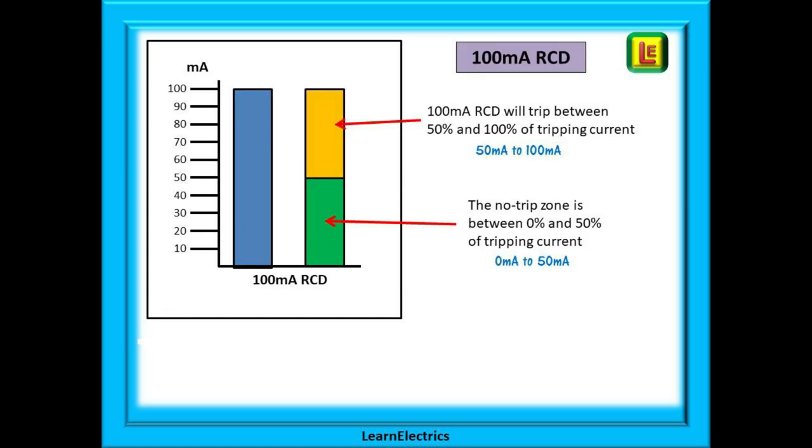Transferring the same logic to a 100 milliamp RCD this will operate at or before 100 milliamps of residual current. This means anywhere between 50 milliamps and 100 milliamps as shown here and between 0 and 50 milliamps is the no trip zone.